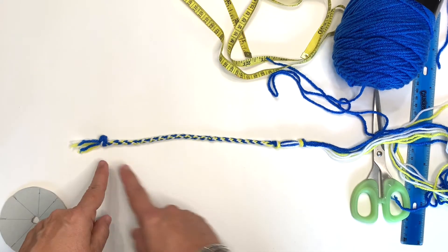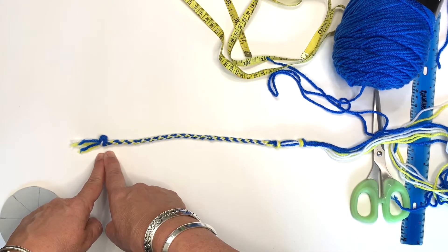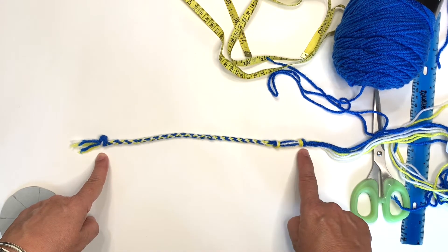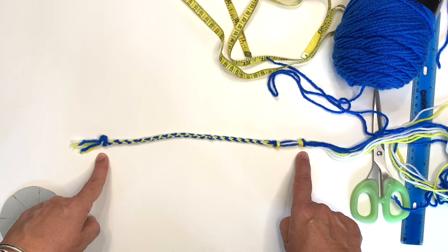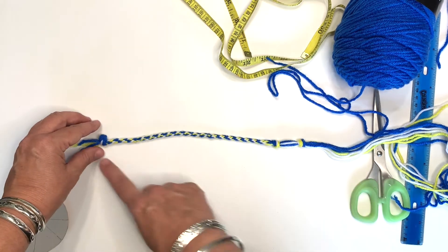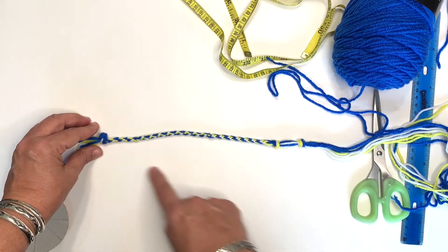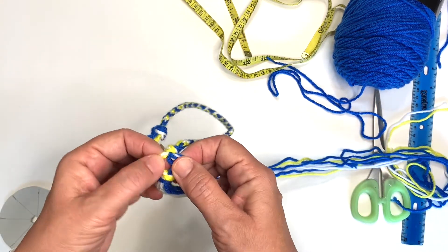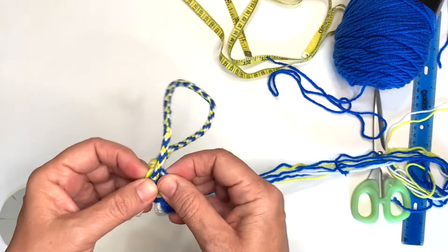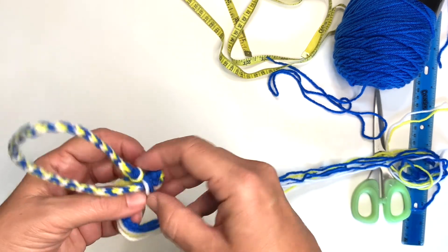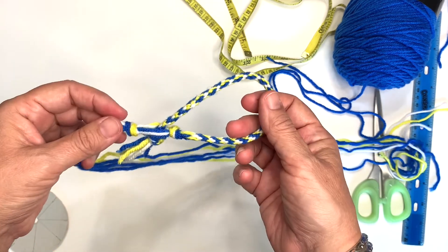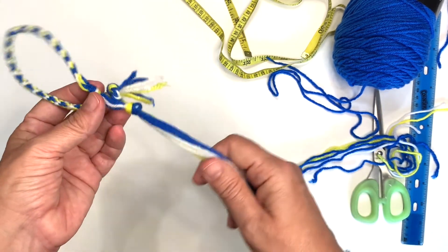So now I have my double knot here, my kumihimo, my last knot, and then my second knot. Watch how it goes together. We're going to take this and put it through this, just like that. There you go.